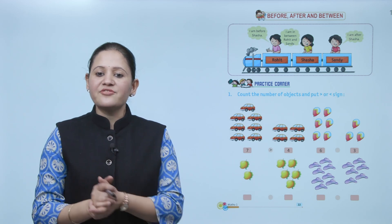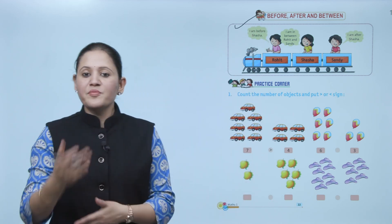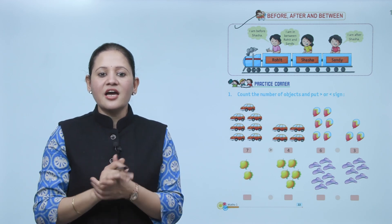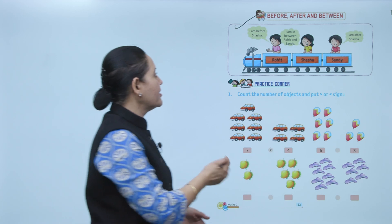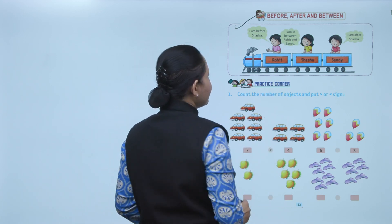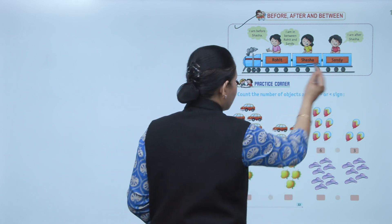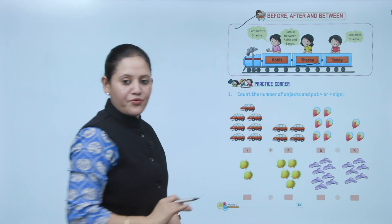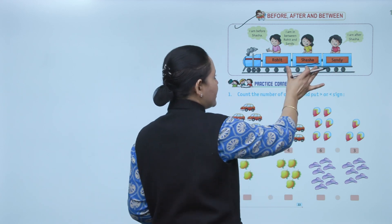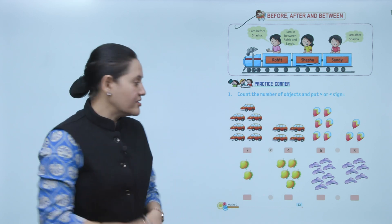Next: before, after, and between. 'Before' means pehle, 'after' means baad mein, and 'between' means do ke beech mein. I am before Shasha. I am in between Rohit and Sandy. And I am after Shasha. So Rohit is before Shasha, Sandy is after Shasha, and Shasha is between Rohit and Sandy.